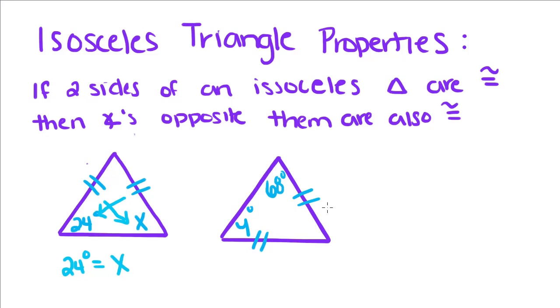If I know that this side is congruent to this side, that means this angle is congruent with this angle. So if this angle equals 68 degrees, that means that y has to equal 68 degrees.